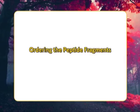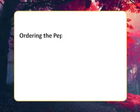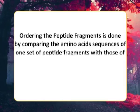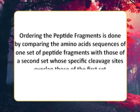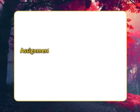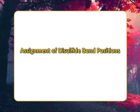Ordering the peptide fragments is done by comparing the amino acid sequences of one set of peptide fragments with those of a second set which specifically overlap those of the first set. Assignment of disulfide bond positions.